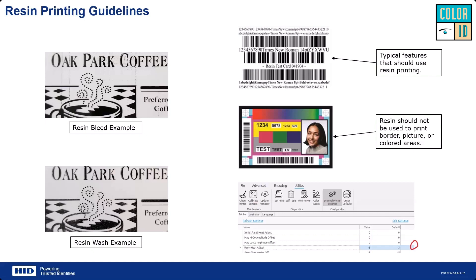Resin is designed to print text and barcodes — it's not ideal for image printing. Using resin to print color images or black borders results in poor image quality; images will look pixelated rather than high definition. Using YMC panels gives much better image quality. We only advise using the K panel for barcodes, text, and QR codes — not for solid black borders or images.